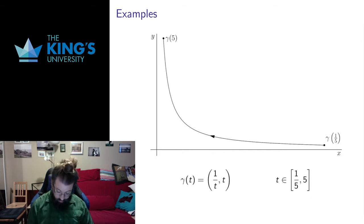Here's an example. Here t is from 1/5 to 5. So what happens when t is 1/5? Then gamma is equal to, the reciprocal of that is going to be 5, 1/5. That gives me this point here, which is that x equals 5, and y equals 1/5.